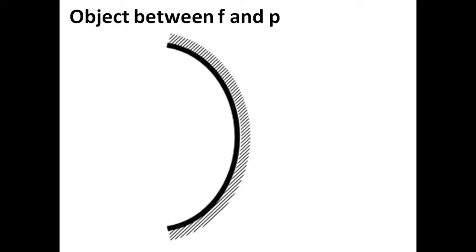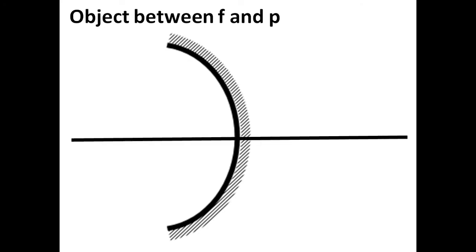As usual, we start off with the concave mirror and the principal axis, then the center of curvature C, the principal focus F, and the pole of the mirror P. The object is placed right there, between F and P.